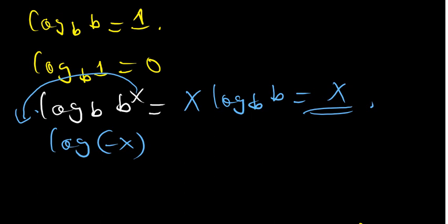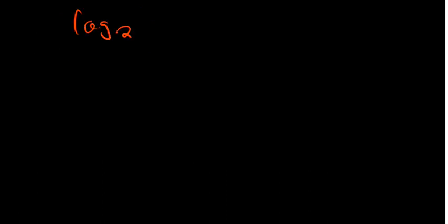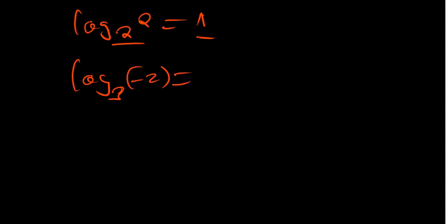Now, regardless of any base, the log of a negative number is undefined. For example, log base 2 of 2 equals 1, but log base 3 of negative 2 is undefined. Also, log base 4 of 1 equals 0 — log of 1 in any base is always 0.